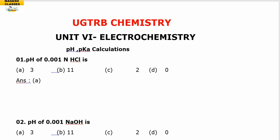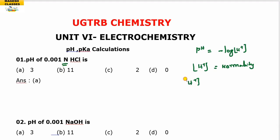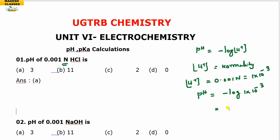The first problem: the pH of 0.001 N HCl. The pH formula is pH = −log[H⁺]. The H⁺ ion concentration is 0.001 N, which equals 1×10⁻³. So pH = −log(1×10⁻³) = −(−3) = 3 − log 1 = 3 − 0 = 3. Your answer is 3.